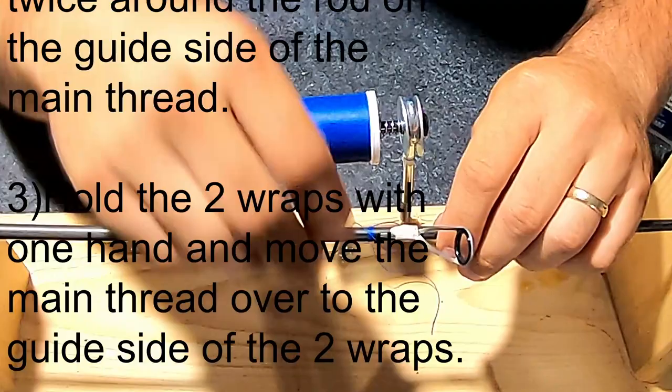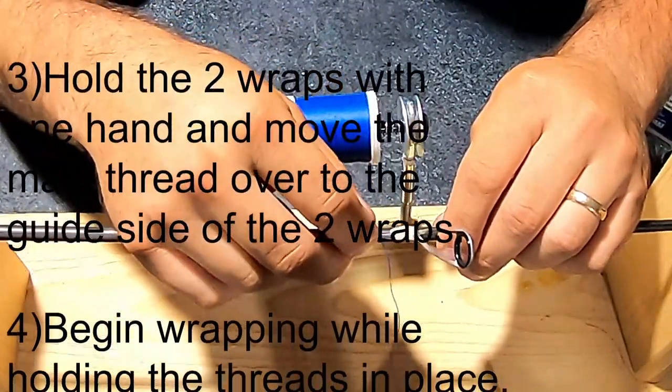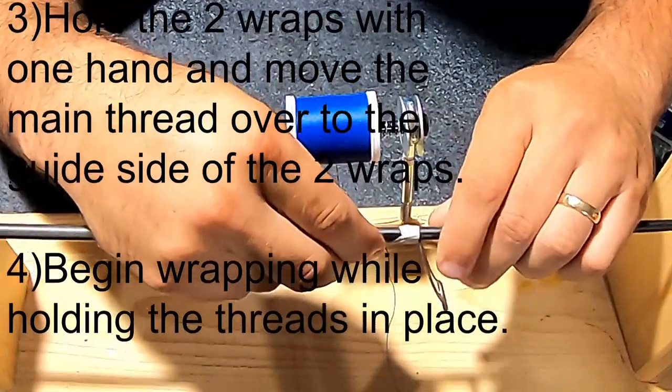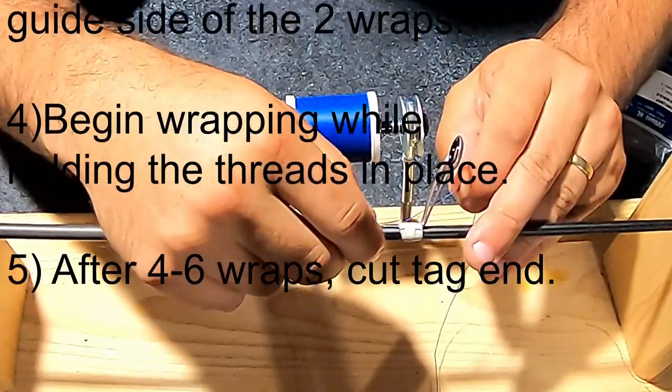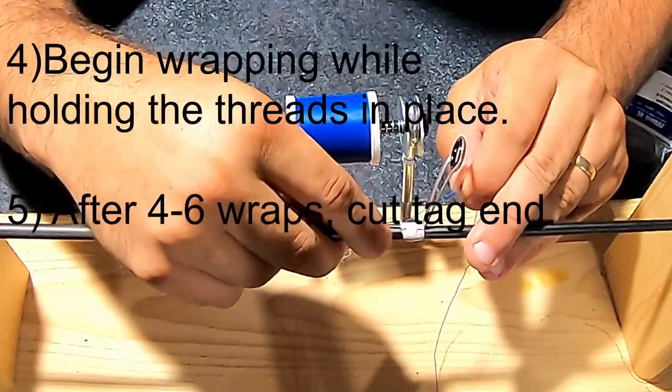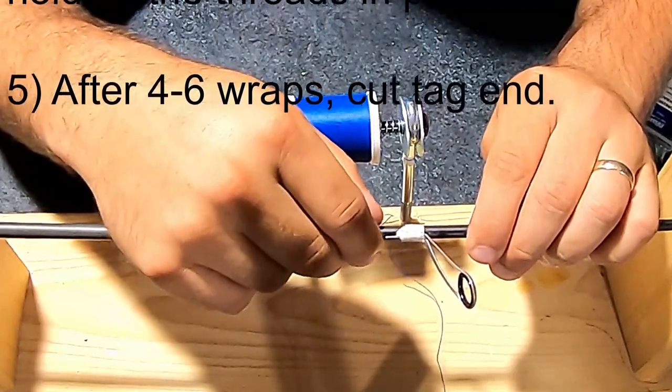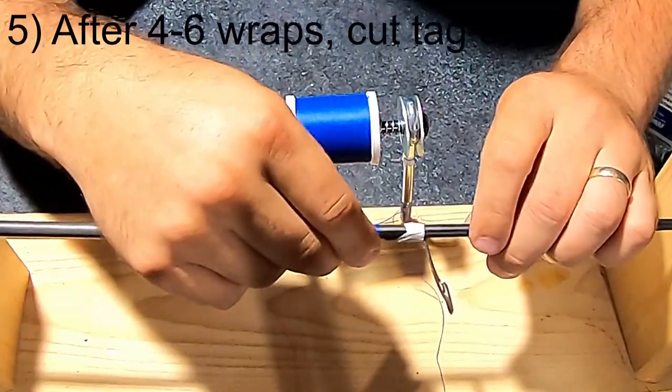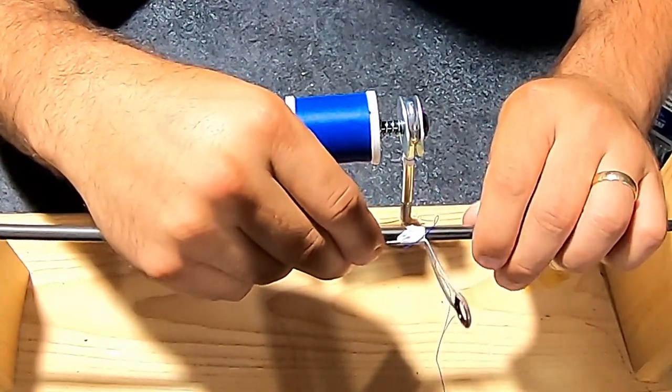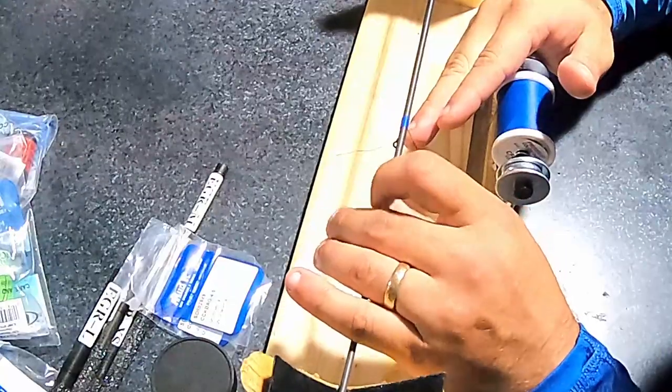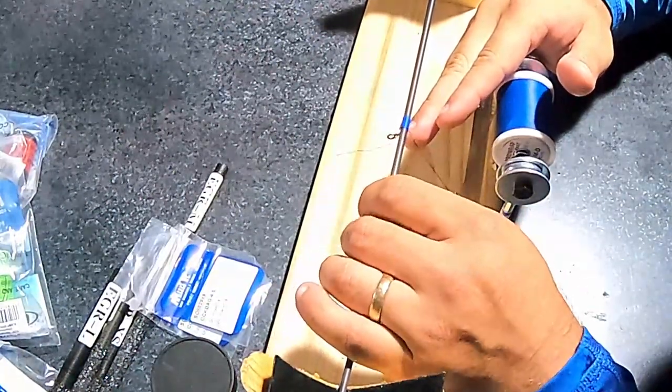You're going to wrap that tag end twice in the direction of the guide. Then hold that with your finger on the back side, and set the main line across those two wraps. That'll essentially make a cross there, which is going to hold the thread in place. Then you'll do a couple of wraps. Once you've got two or three wraps in, you can let your fingers off of there. It'll start to wrap itself. I like to wrap four to six thread wraps with that tag end being wrapped underneath it. After that, you can cut it off. Then continue wrapping up towards the guide.